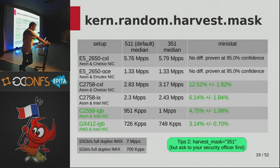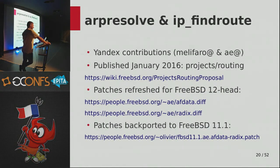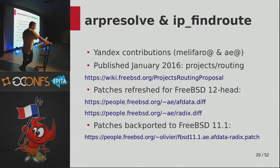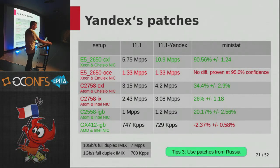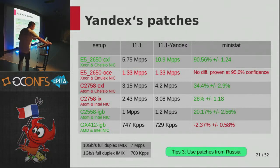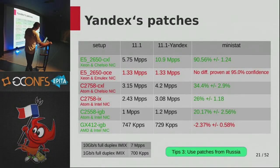A quick Google search revealed these are known problems already fixed by a team at Yandex. They have patches available and I just had to backport them to my FreeBSD - two patches addressing the lock contention issues. I kept my modified harvest mask, applied the patches, and ran new benchmarks. The result: almost twice the performance on my router. My manager will be happy.